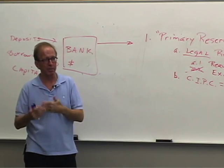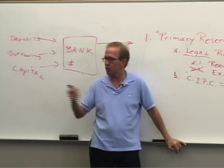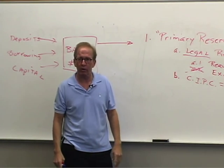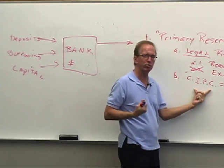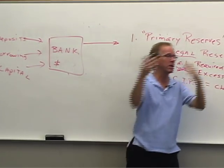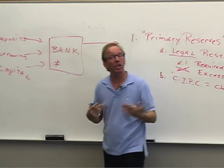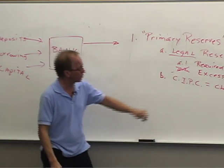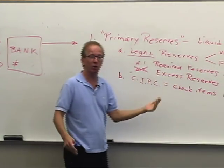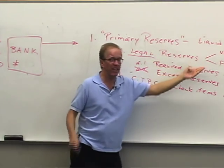The key point: say it takes two days to get credit for a check. For those two days the check is out of our hands and we're waiting for the Federal Reserve to credit us. During that time we'd enter $1,000 as CIPC — it's comparable to an account receivable. It's a liquid asset because the money will be here soon. Two days from now the Fed credits our reserve account and we remove the $1,000 from CIPC.